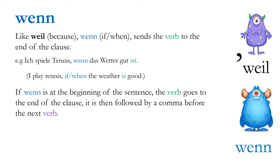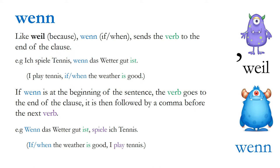Now you may want to start with 'wenn' at the beginning of the sentence. If you do that, the verb goes to the end of the first clause and the second clause begins with the next verb. So: 'Wenn das Wetter gut ist, spiele ich Tennis' — if or when the weather is good, I play tennis. The German order being: when the weather good is, play I tennis.